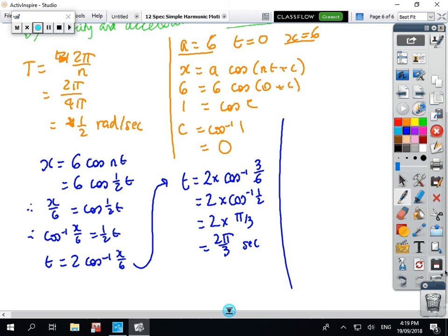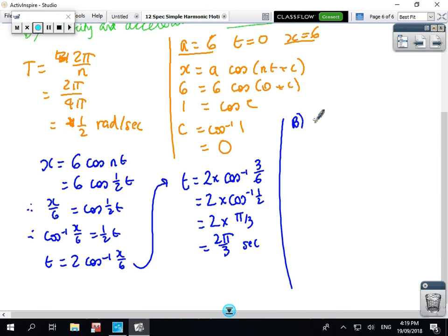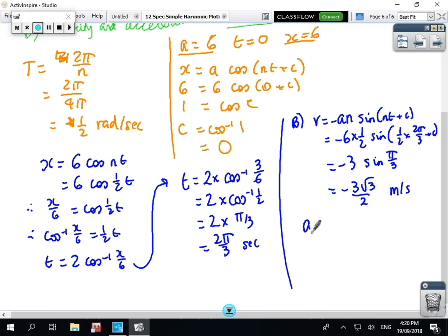Second part of the question: find the velocity and acceleration at this time. Part B: velocity is -NA sin(Nt), which equals -0.5 times 6 sin(π/3), which equals -3√3/2 meters per second. And acceleration is -N² X, which is -(1/2)² times 3 equals -3/4 meters per second squared.